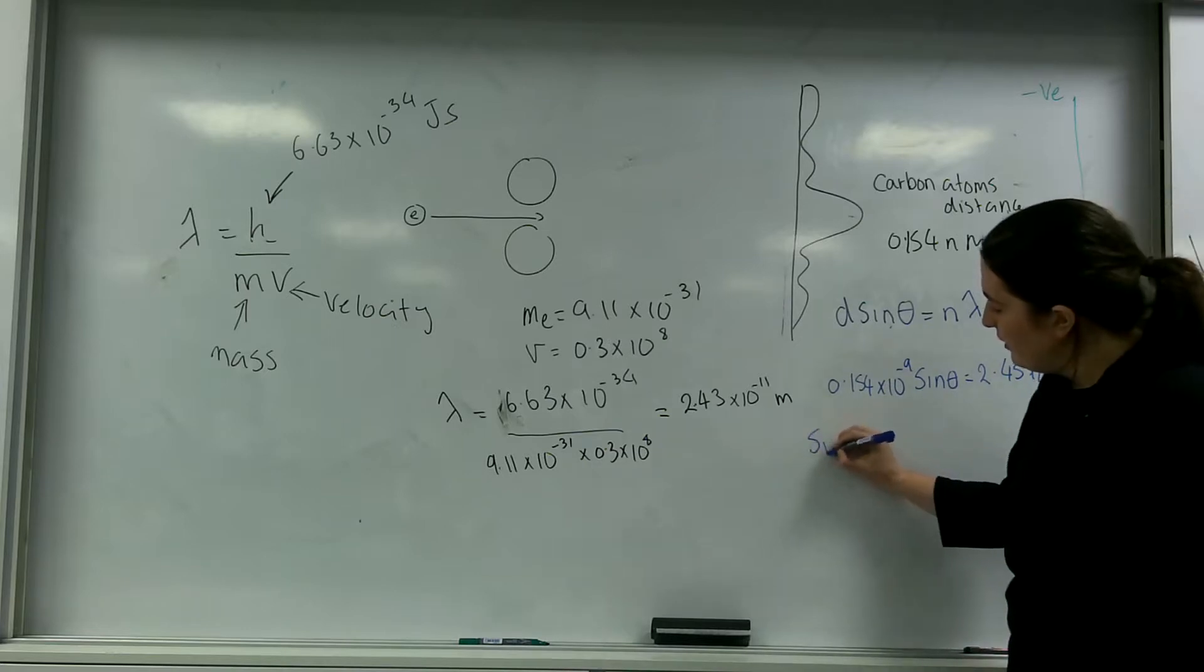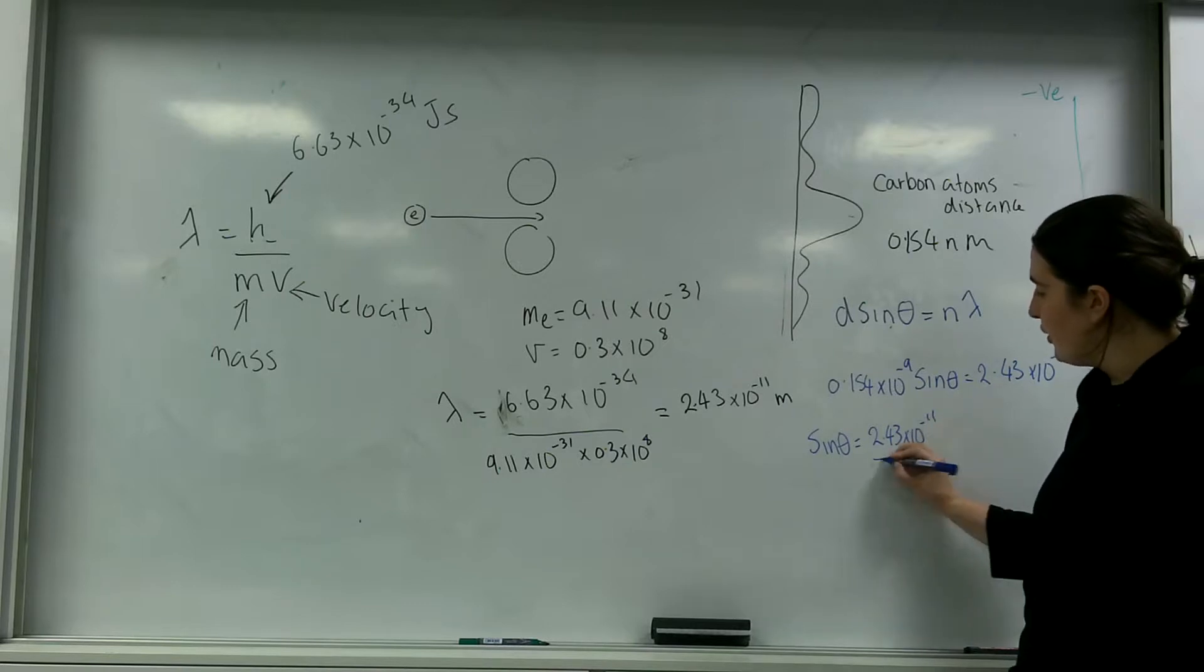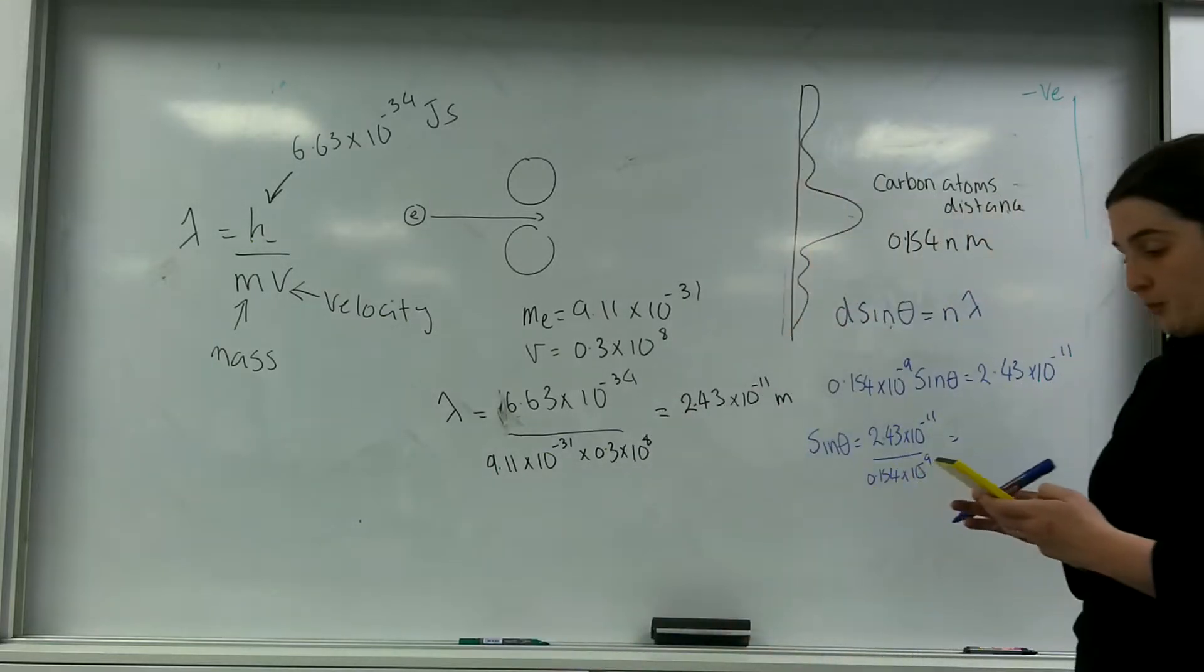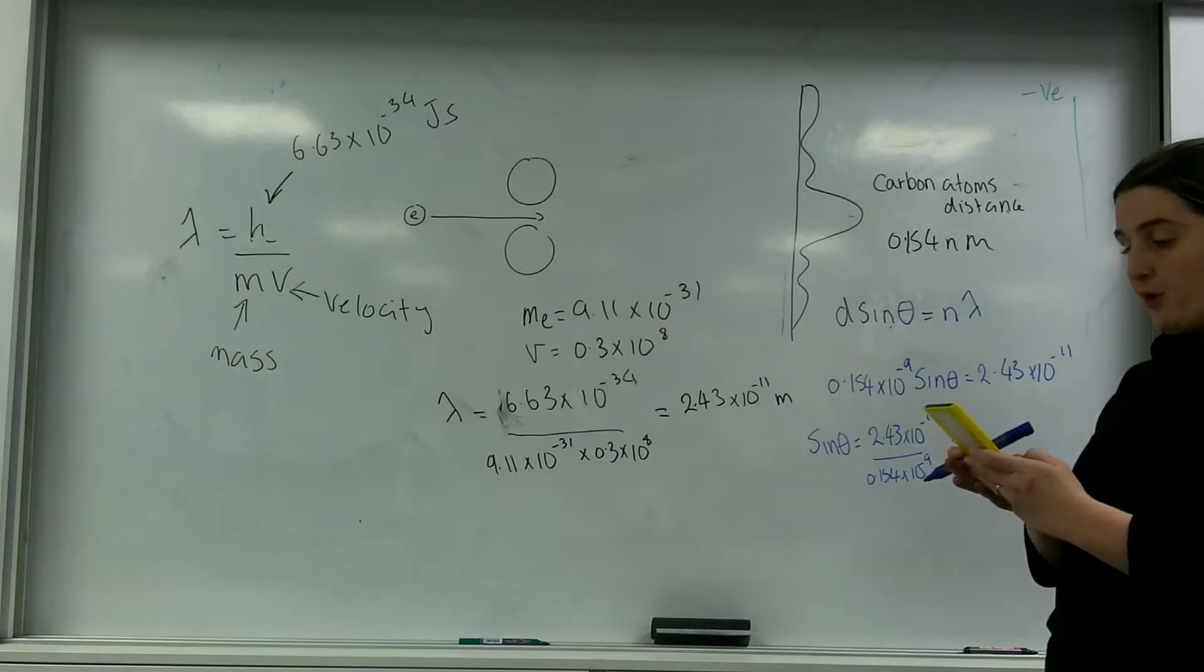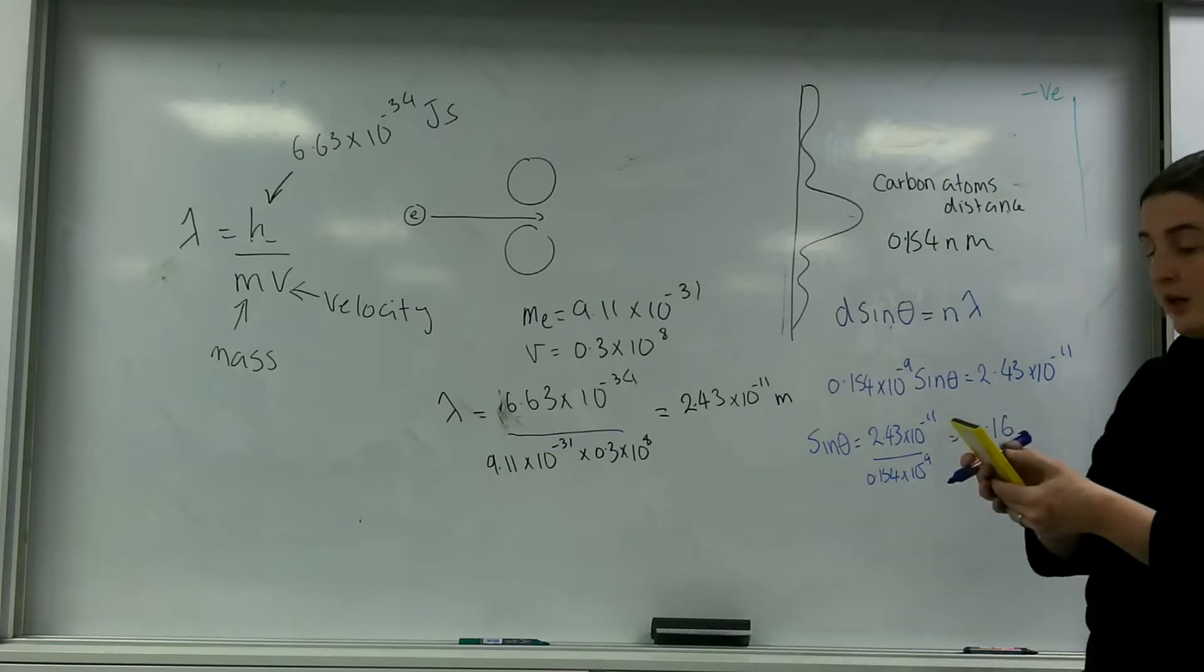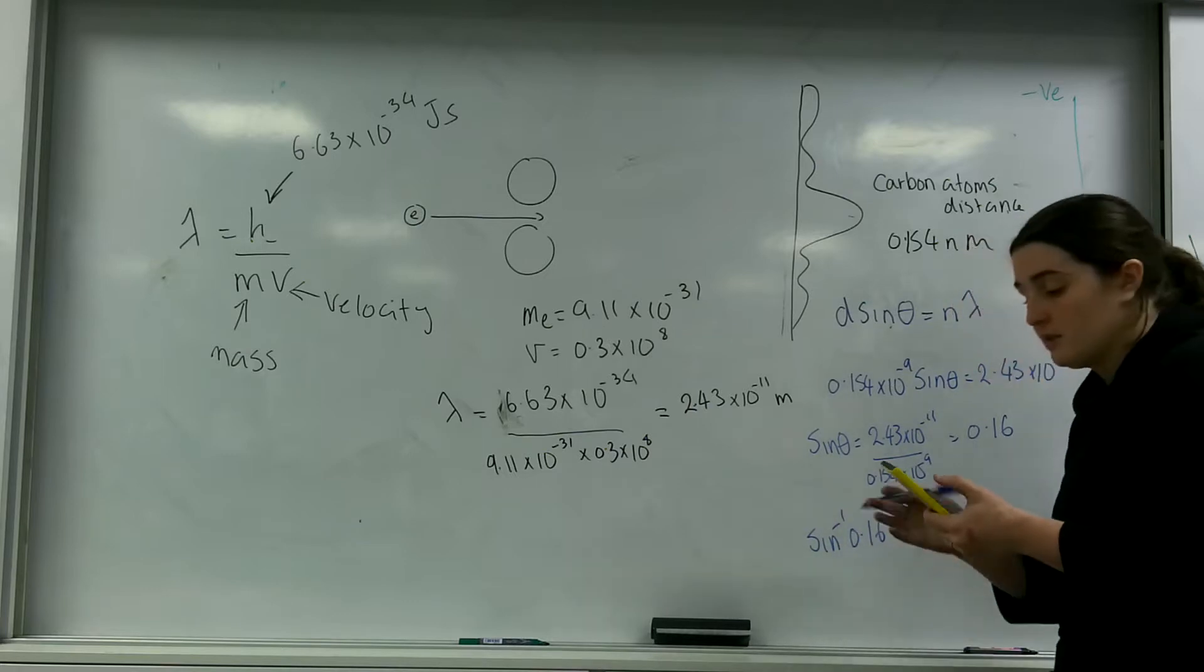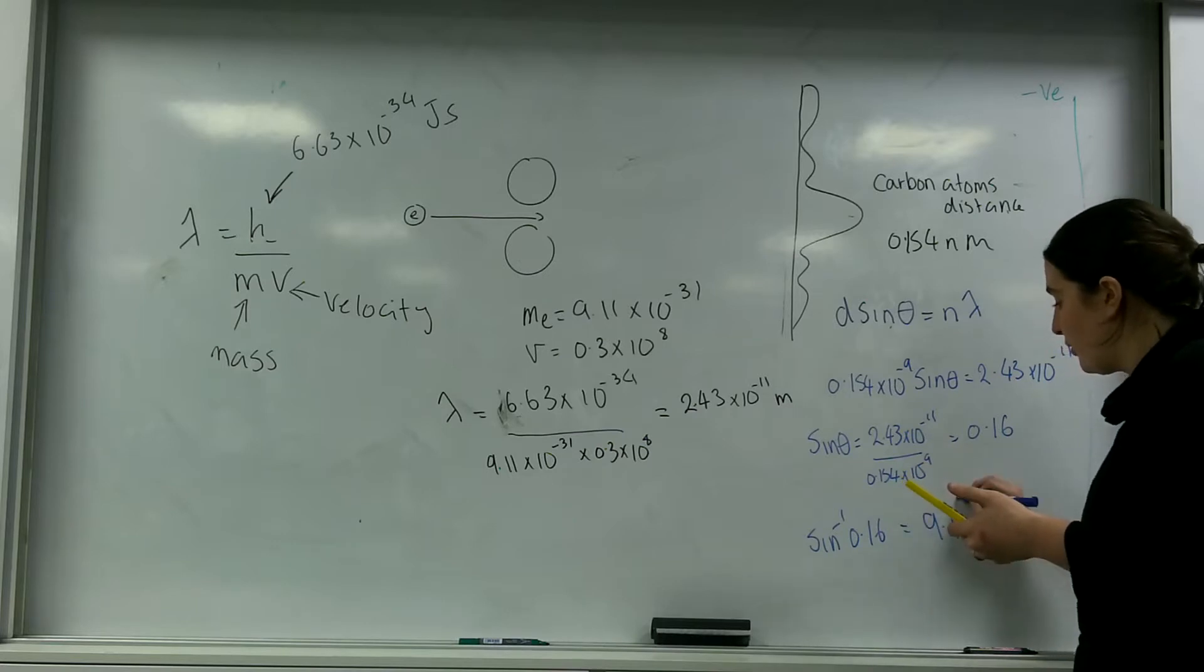sin theta equals 2.43 times 10 to the minus 11 over 0.154 times 10 to the minus 9. So 2.43 times 10 to the minus 11 divided by 0.154 times 10 to the minus 9 is 0.16. And sin to the minus 1 of 0.16 equals an angle of approximately 9.1 degrees.